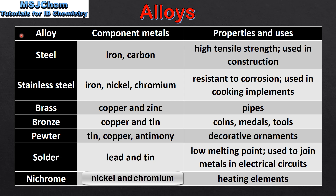Finally, we'll have a look at some examples of alloys, their component metals, and their properties and uses. Steel is composed of iron and carbon and is used in construction. Stainless steel is composed of iron, nickel and chromium and is used in cooking implements. Brass is made of copper and zinc and is used in pipes. Bronze is made of copper and tin and is used in coins, medals, tools and statues.